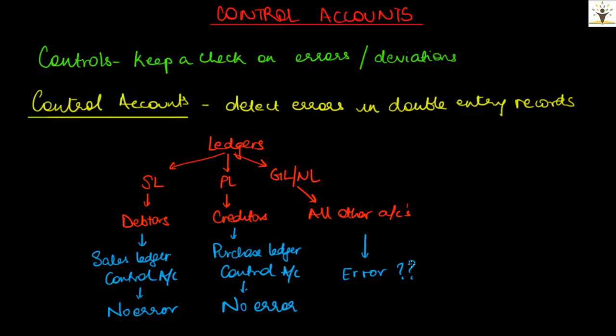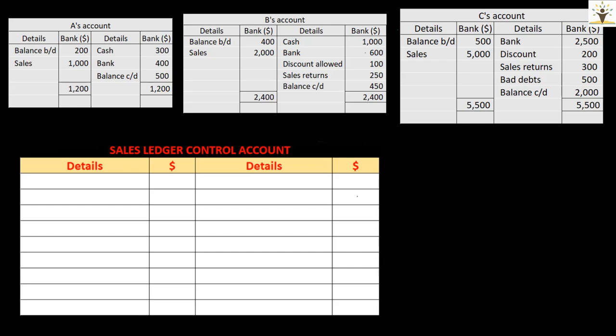Let us consider a detailed example for sales ledger control account to explain how it will help in pointing out that the sales ledger is accurate or not. A sales ledger control account is nothing but a summarized total of all the transactions in the sales ledger. We shall add up all transactions in all the debtors accounts and summarize it to prepare a total debtors account. Consider this example of a business having just three debtors accounts — A, B, and C — in the sales ledger.